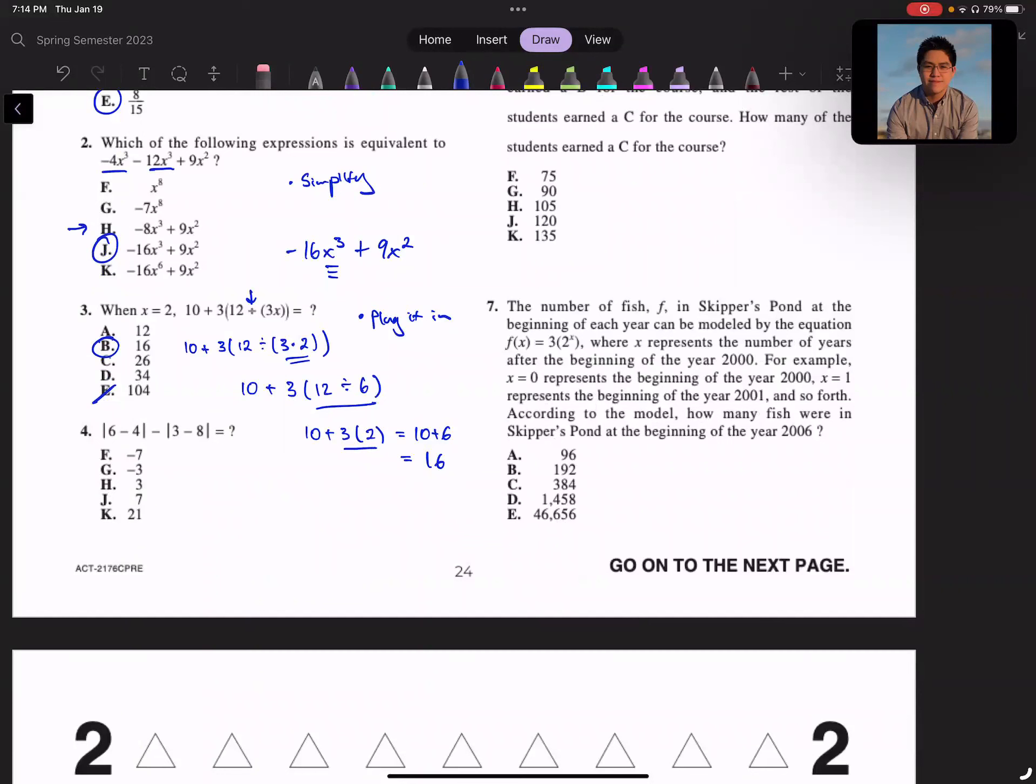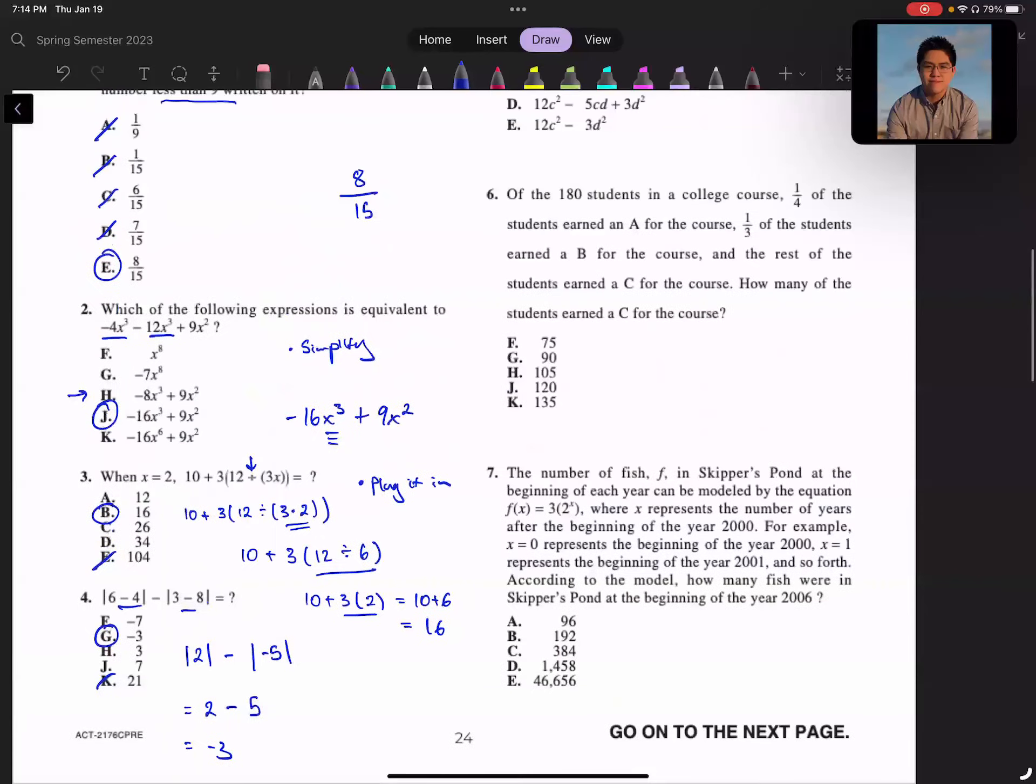Number 4, really testing your absolute value. What is this expression? Remember the first 10 to 20 are generally just kind of easy, so really make sure you get these points. You want to evaluate like parentheses but keep the absolute value. So 6 - 4 is 2, minus the absolute value of 3 - 8, which is -5. And absolute value just makes it positive: 2 - 5, which is 5. So 2 - 5 gets me -3. Generally that makes sense. I'm trying to see that these close values together, so 21 wouldn't make any sense.